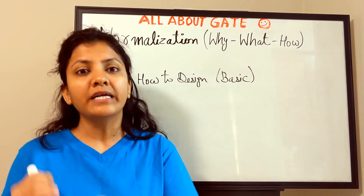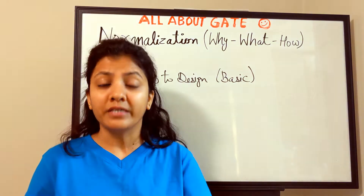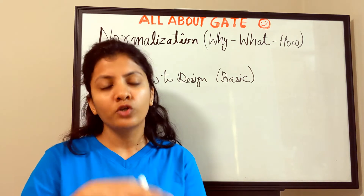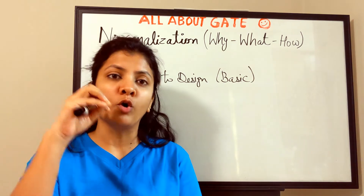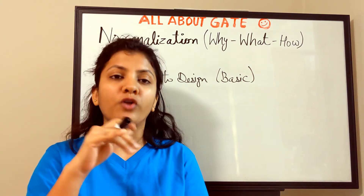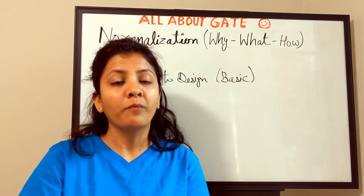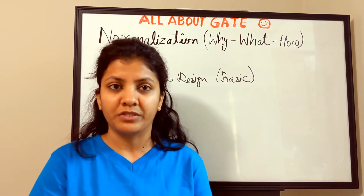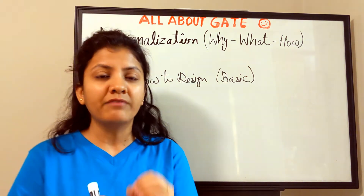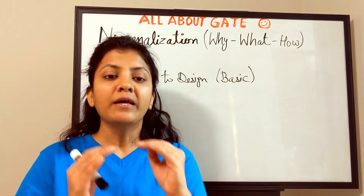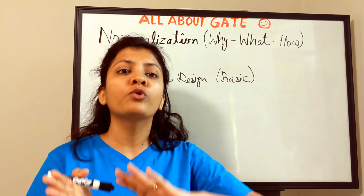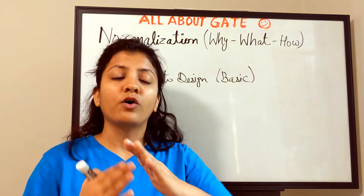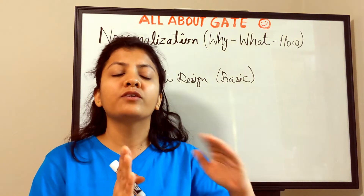Otherwise we call it an un-normalized database, and now the term normalization comes into the picture. Normalization is a kind of process which tries to make something normal or regular. Normalization will be performed over the database or relational schema design to make it more normal. It is not normal if it does not behave normally over the basic operations. This is the need for performing normalization — when we point out the issues and try to resolve them, we alter the design, and that alteration is normalization.